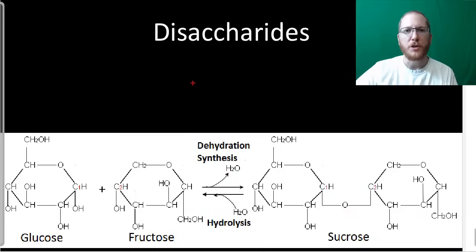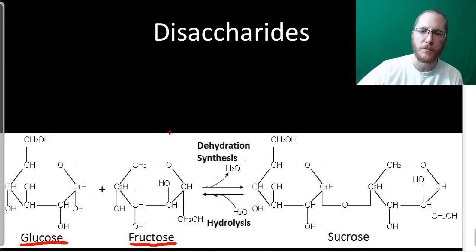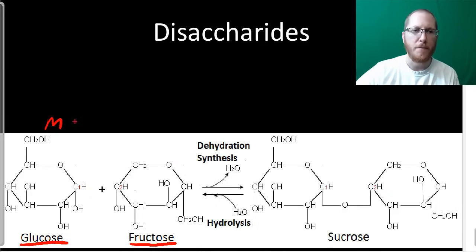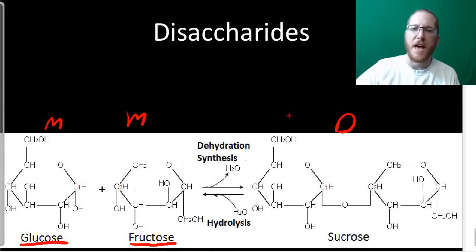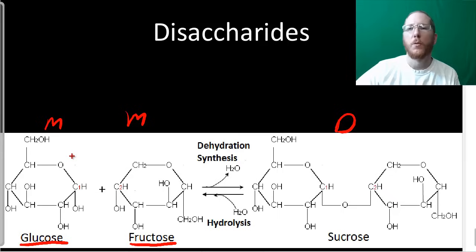A disaccharide is just two monosaccharides stuck together. For example, sucrose is a glucose and a fructose — two monosaccharides stuck together to make sucrose. We do a dehydration synthesis to stick them together, going from two monos to a disaccharide. If we do hydrolysis, that breaks a disaccharide back to monosaccharides. So when you ingest sucrose — table sugar — your body breaks it down into fructose and glucose, which it can then use.